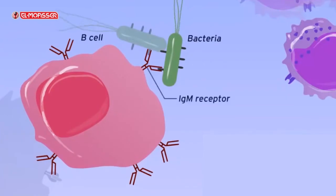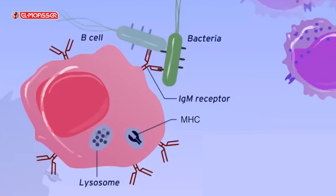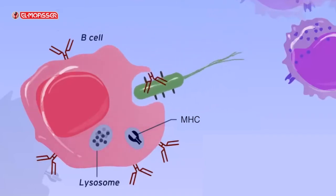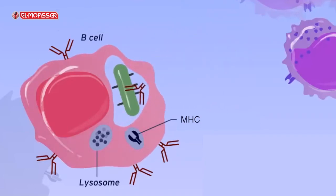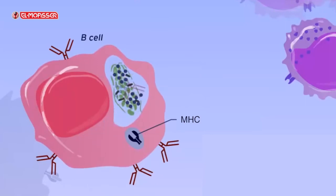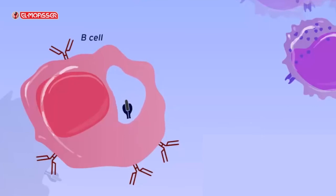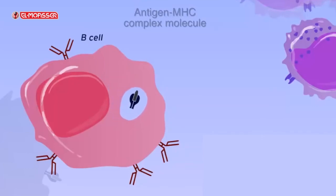B cells also recognize the same type of microbe through immune receptors present on the surface of B cells and bind with the antigens on the surface of the microbe. B cells contain the major histocompatibility complex protein and lysosomes, and disintegrate the microbe into small parts, separating the antigens using enzymes released from the lysosomes.